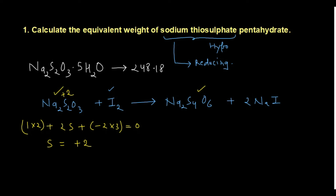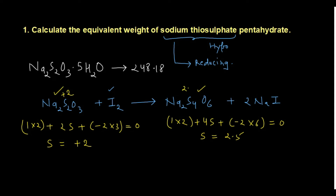Similarly, for Na₂S₄O₆: 2(+1) + 4(s) + 6(−2) = 0. Solving gives s = +2.5. So the oxidation state of sulfur in Na₂S₄O₆ is +2.5. The oxidation state can have a fractional value — this is an important point. Now we need to find the exact change in oxidation state, which requires balancing the reaction.